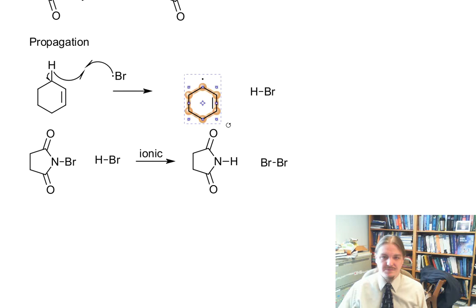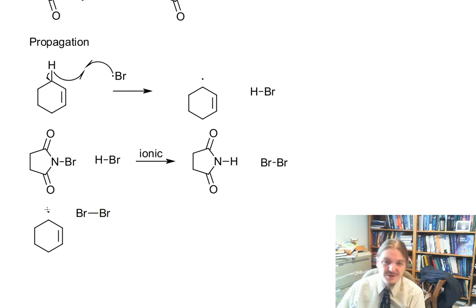And now we generate Br2, but we're generating a small amount of Br2 in conditions that are otherwise favorable for radicals. I like long bonds for my radical mechanism steps. And so we have the arrows for the reaction.